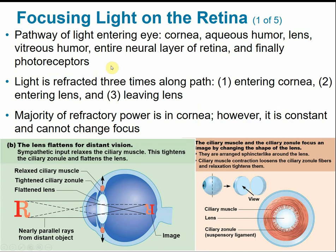As light enters the eye, it passes through the cornea, then the aqueous humor in the anterior segment, through the lens where it gets refracted again, and then through the vitreous humor fluid in the posterior segment. Finally, it reaches the neural layer of the retina containing photoreceptors. Along this pathway, light is bent or refracted three times — once when it enters the cornea, once when it enters the lens, and once when it leaves the lens.